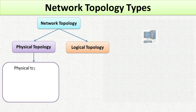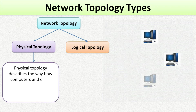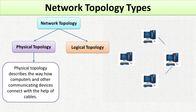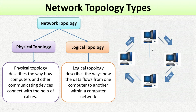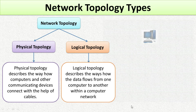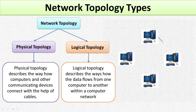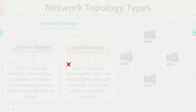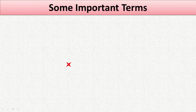Physical topology describes the way how computers and other communicating devices connect with the help of cables. Logical topology describes the way how the data flows from one computer to another within a computer network. Before I start explaining different types of topologies, you should know some important terms which we are going to use in our explanation.